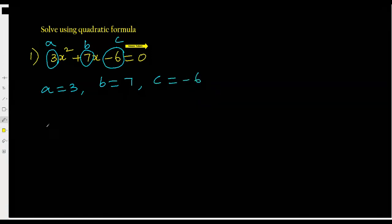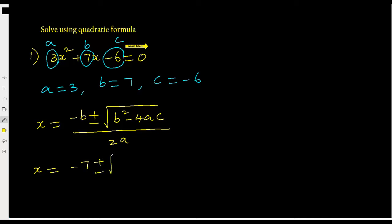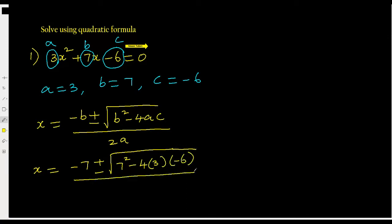Write the quadratic formula: x equals negative b plus or minus the square root of b squared minus 4ac, over 2a. Now substitute the values: negative b is negative 7, plus or minus the square root of 7 squared minus 4 times 3 times negative 6, divided by 2 times 3.